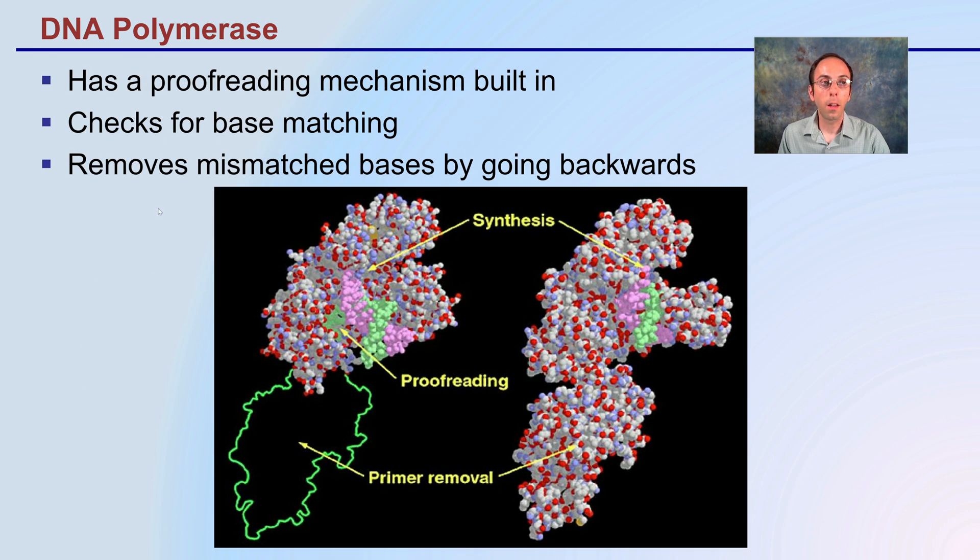This polymerase has a proofreading mechanism built in which is great to reduce the chance of there being errors. It checks for base matching, making sure adenine is binding with thymine and guanine with cytosine. It will remove mismatched bases by going backwards and ensuring that corrections are made as it reads along and proofreads that DNA sequence because we do not want mutations to occur.